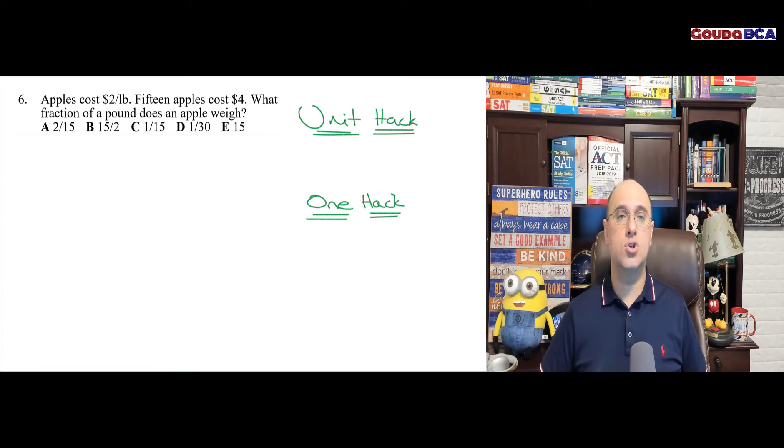Apples cost $2 per pound. So dollars per pound, that's a unit. 15 apples cost $4, that's a unit. What fraction of a pound does an apple weigh?